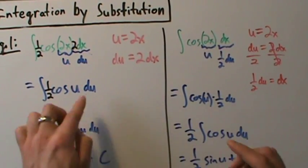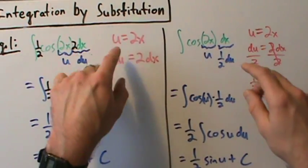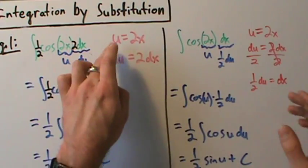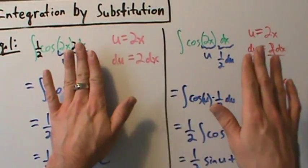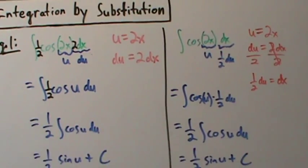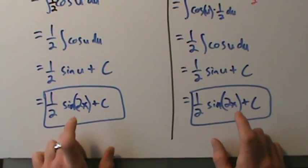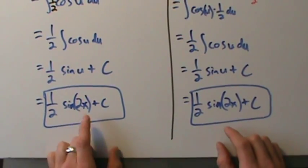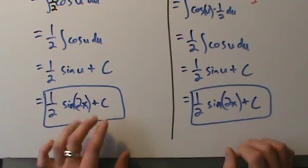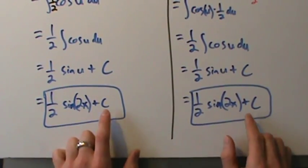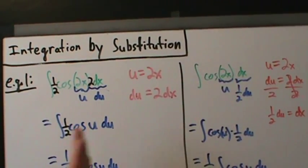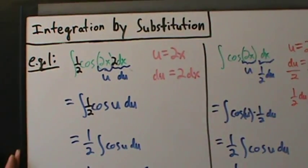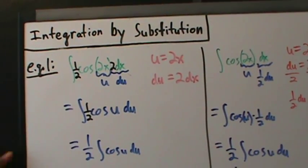Two different ways to handle changing everything to u: when you make the substitution, the old variable has to go away — get everything in terms of the new variable. Integrate, and for indefinite integrals, go back to the old variable and don't forget plus c. How do we know what to let u be? Look for a function and its derivative or a constant multiple of its derivative; if you can't see that, let u be the inside guy. That's the general overview of integration by substitution with example 1, with more examples in the next few videos.